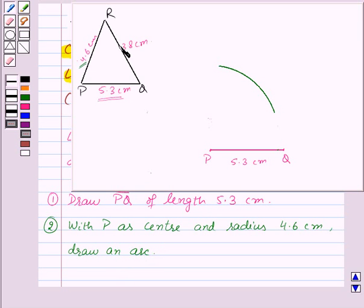Next we have QR is equal to 3.8 cm. So now with Q as center and radius 3.8 cm, we will draw an arc to cut this arc at point R. So this is the point R.